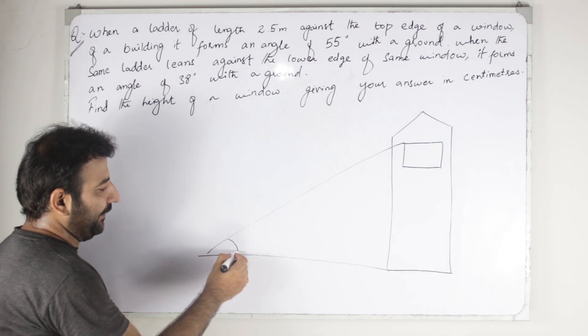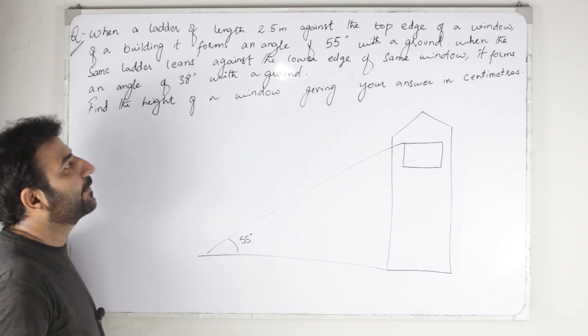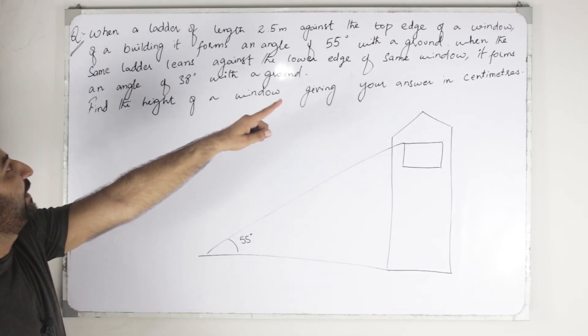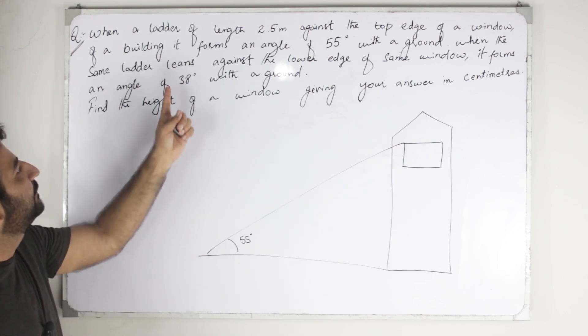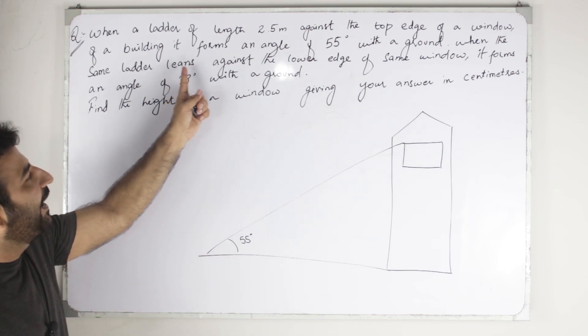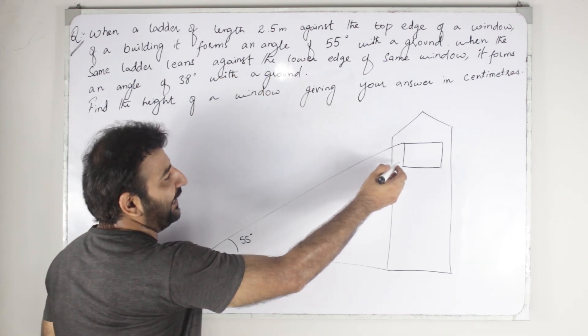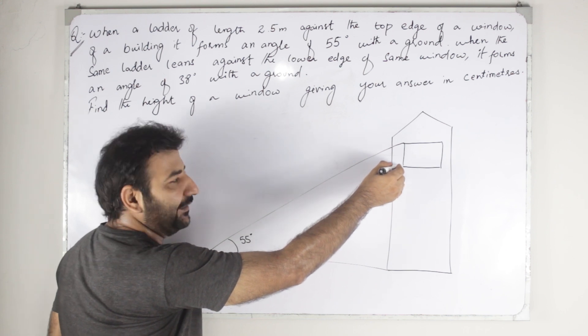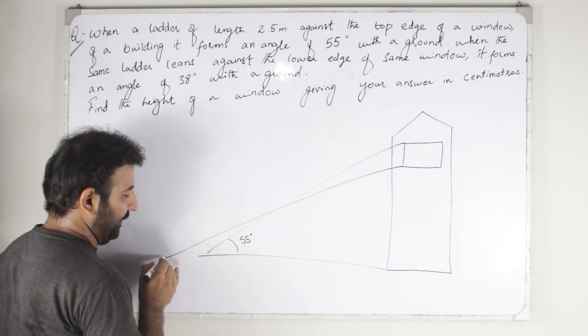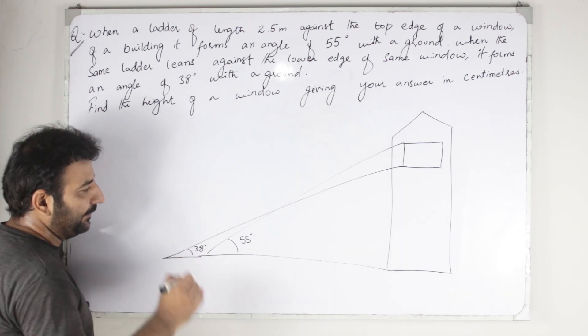When the same ladder leans against the lower edge, at this point, this is the lower edge, and I'm going to draw this here at 38 degrees.